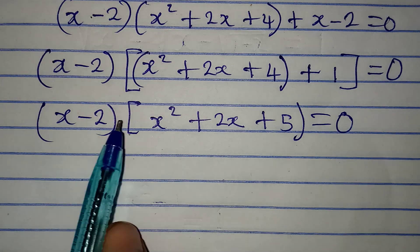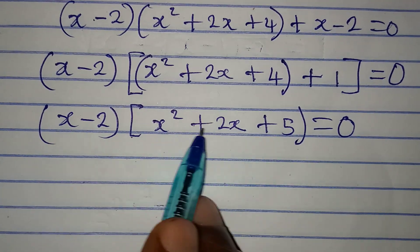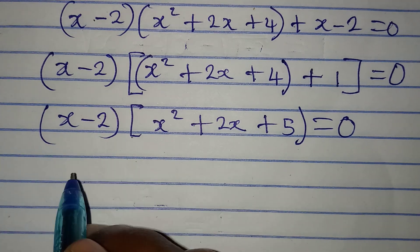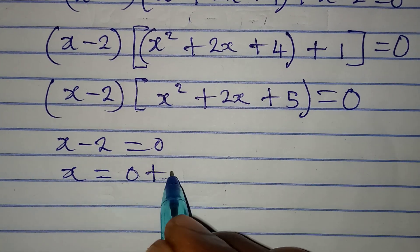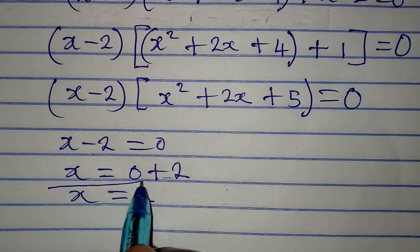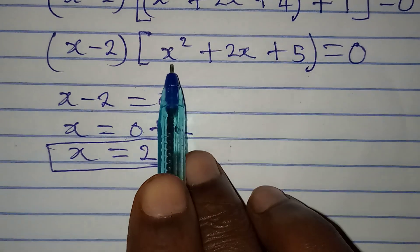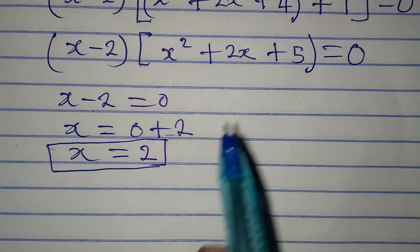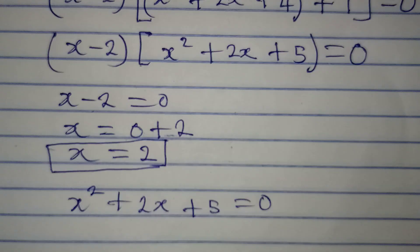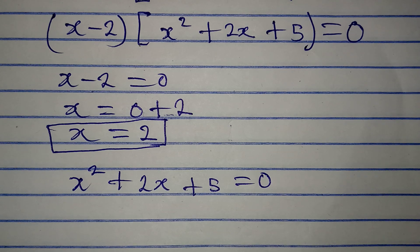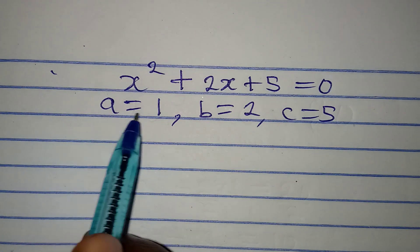Now we apply the zero product rule, which says it is either x - 2 = 0 or x² + 2x + 5 = 0. If we pick x - 2 = 0, then x = 2. This is one solution to the equation. Now let's go ahead to get the other solutions by solving x² + 2x + 5 = 0, which is a quadratic equation, using the formula method.